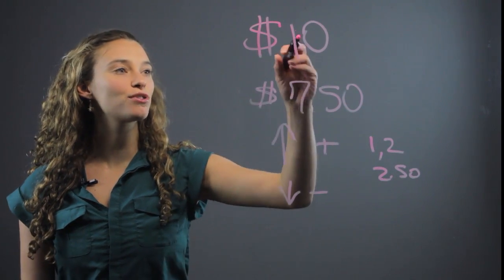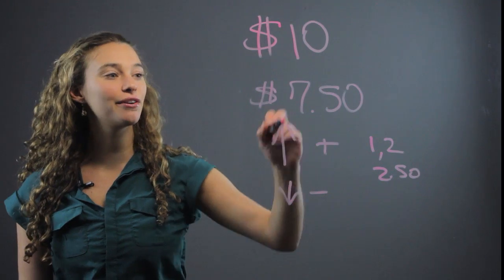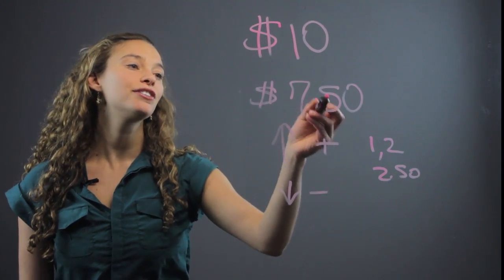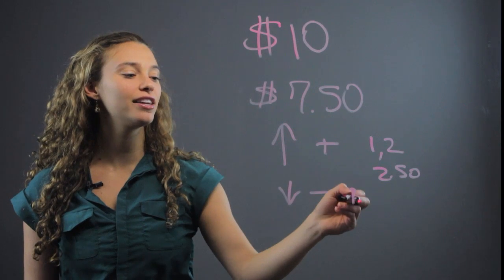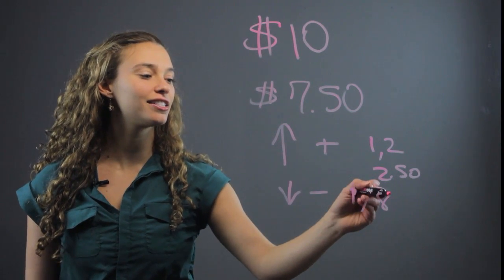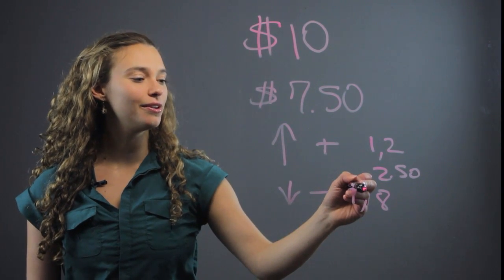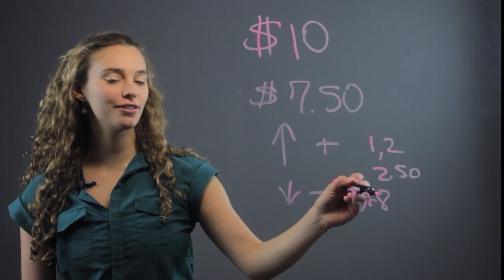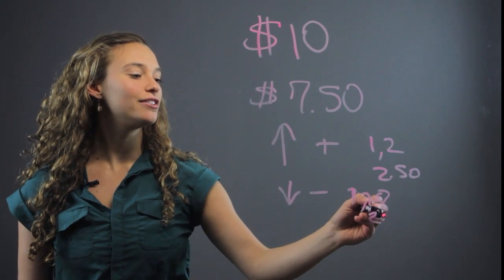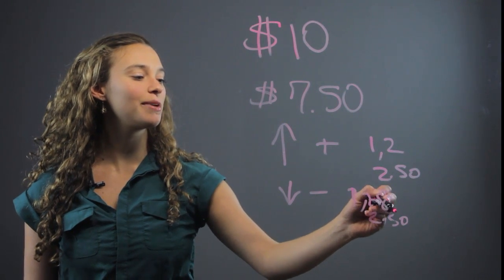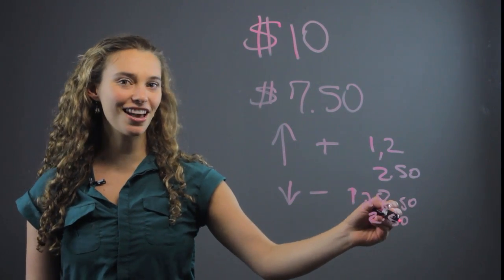You can also subtract from $10, start from $10 and go down to $7.50. So have them count from $10 to $9, that's $1, to $8, that's $2, right? And then $2 is the $8 and then they subtract $0.50. So it becomes again $2.50 when they subtract from $8.50 down to $7.50. So that's another way.